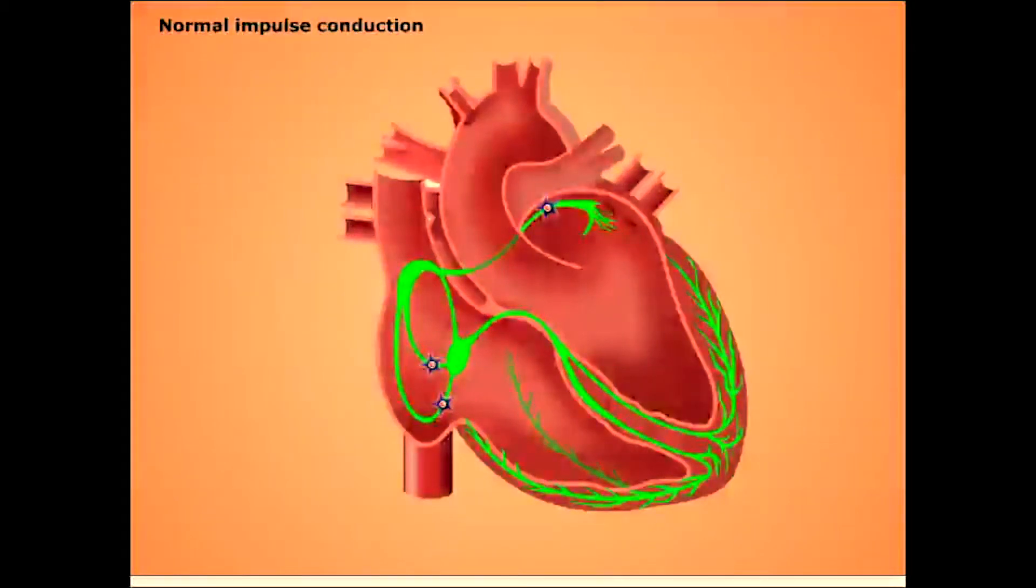Once they reach the atrioventricular node, they continue down the bundle of His, which divides within the interventricular septum into right and left bundle branches. From the apex, action potentials are then carried by Purkinje fibers to the ventricular walls.